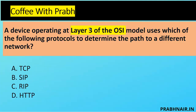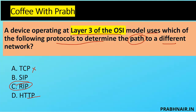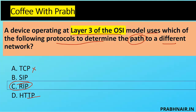Next question: the device operating at Layer 3 of the OSI model uses which protocol to determine the path to a different network? Two keywords: Layer 3, and protocol to determine the path between different networks. TCP is never used for routing (works on Transport Layer) — removed. SIP is used for VoIP on Application/Session Layer — removed. HTTP works on Application Layer — removed. The only close option is RIP — Routing Information Protocol — a routing protocol used for communication between different routes. Answer is C — RIP.